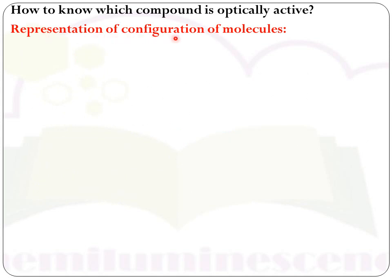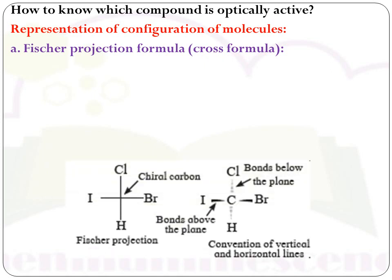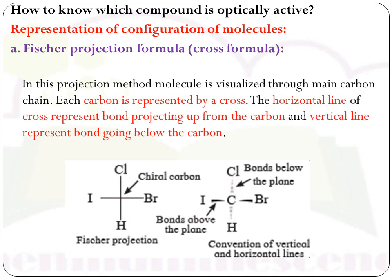To know which compound is optically active, we need to know the representation of configuration of molecules. First, we will see Fisher projection formula, also called cross formula. In this formula, the molecule is visualized through the main carbon chain, and each carbon is represented by a cross. The horizontal line represents a bond present above the plane (shown by bold bonds), and the vertical line represents a bond present below the plane (shown by dotted lines). So, chlorine and hydrogen are below the plane, while iodine and bromine are above the plane.